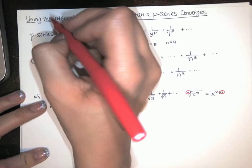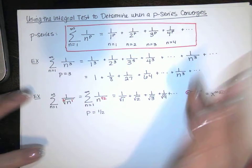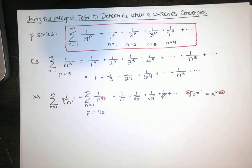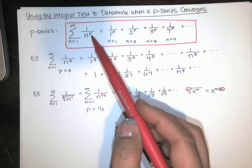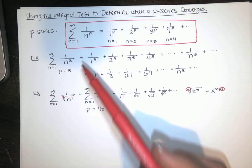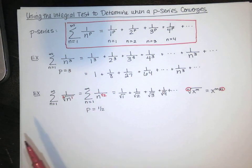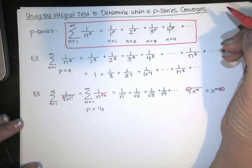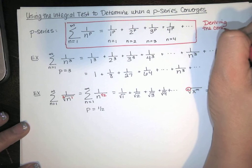A p-series is just a series that looks like this. For some values of p it converges, and for others it diverges. We'd like a rule: when I see p equals 3, I'd like to just say that converges or diverges. So we're going to use the integral test to come up with that rule for p-series — we'll call it the p-series test. In this video we're deriving the conclusions of the p-series test.